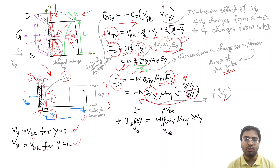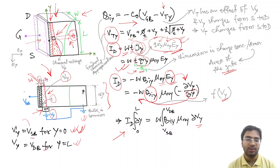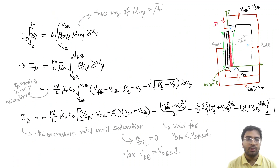So your equation will become: Id × ∫dy from 0 to L = W × ∫Qiy·dVy from Vsb to Vdb, because when y = 0, Vy = Vsb, and when y = L, Vy = Vdb. For simplicity, we can take the average mobility as μn̄, and the equation becomes: Id = (W/L)·μn̄ × ∫Qiy·dVy from Vsb to Vdb.